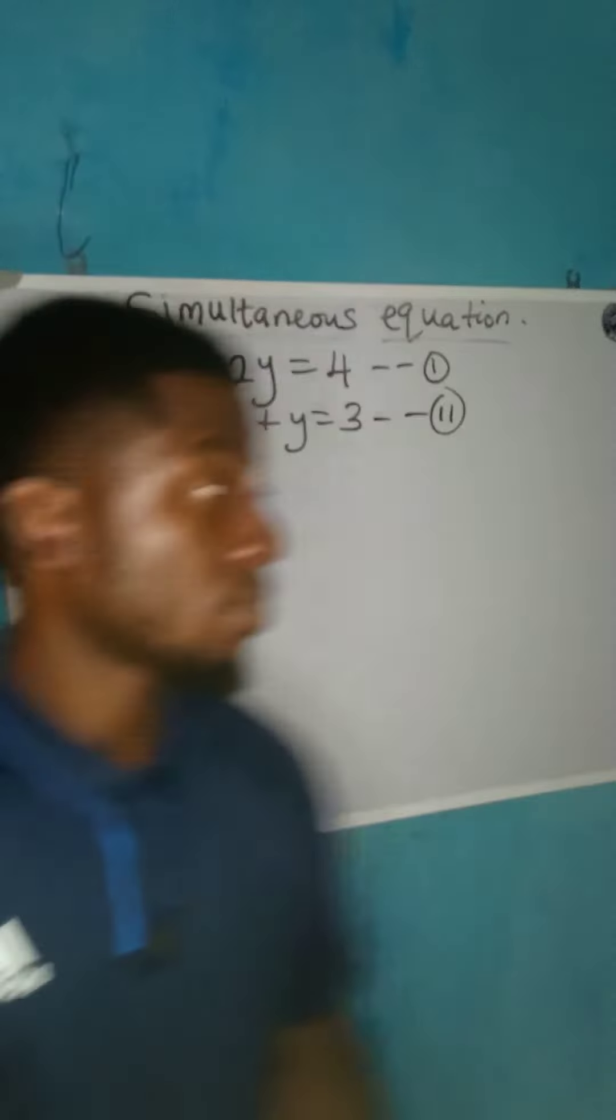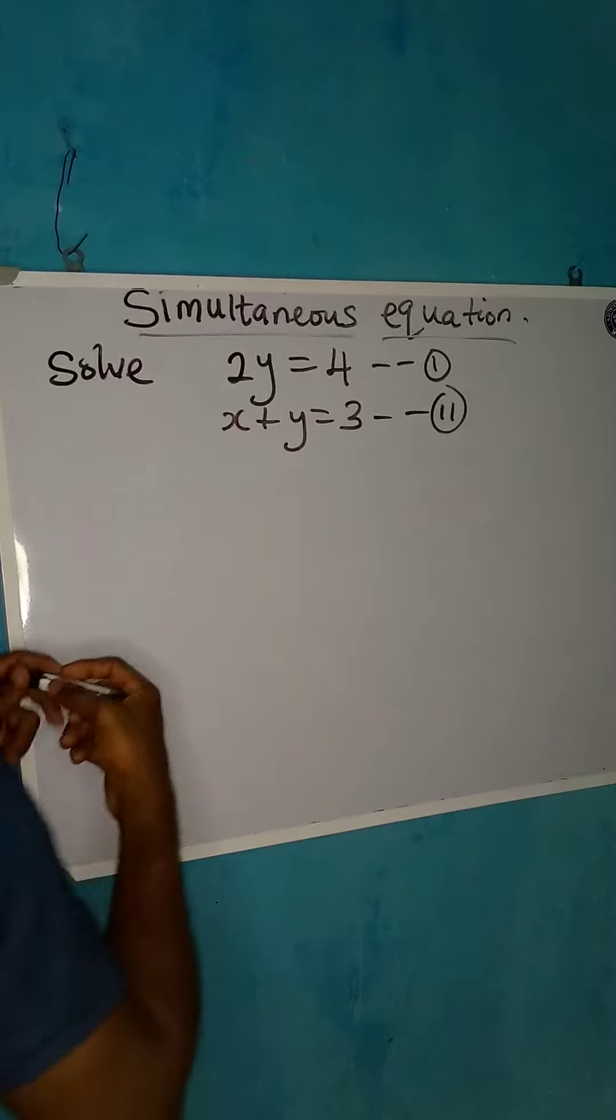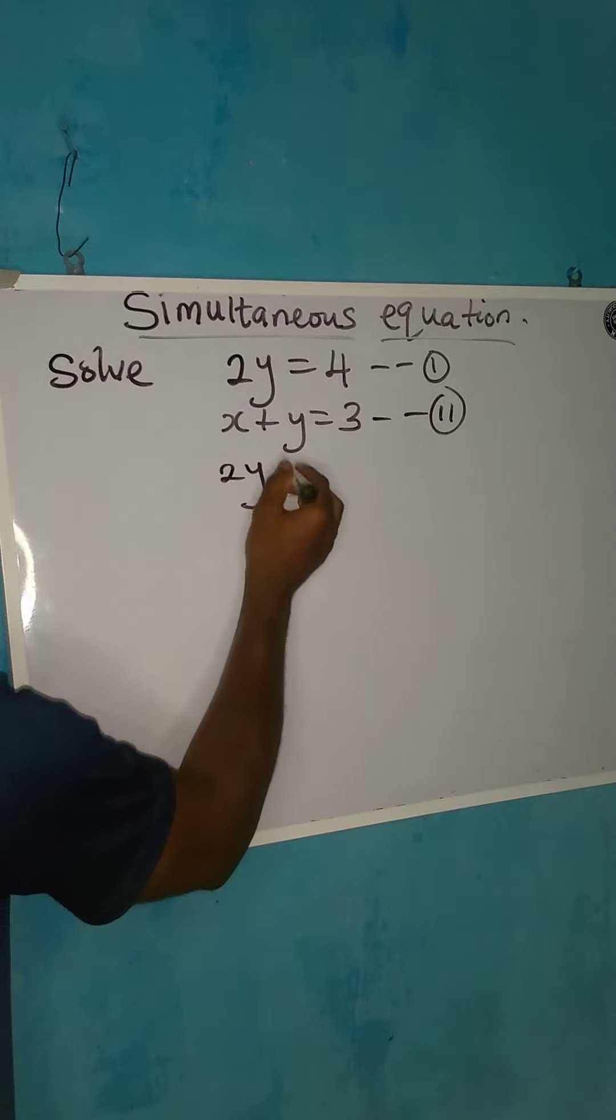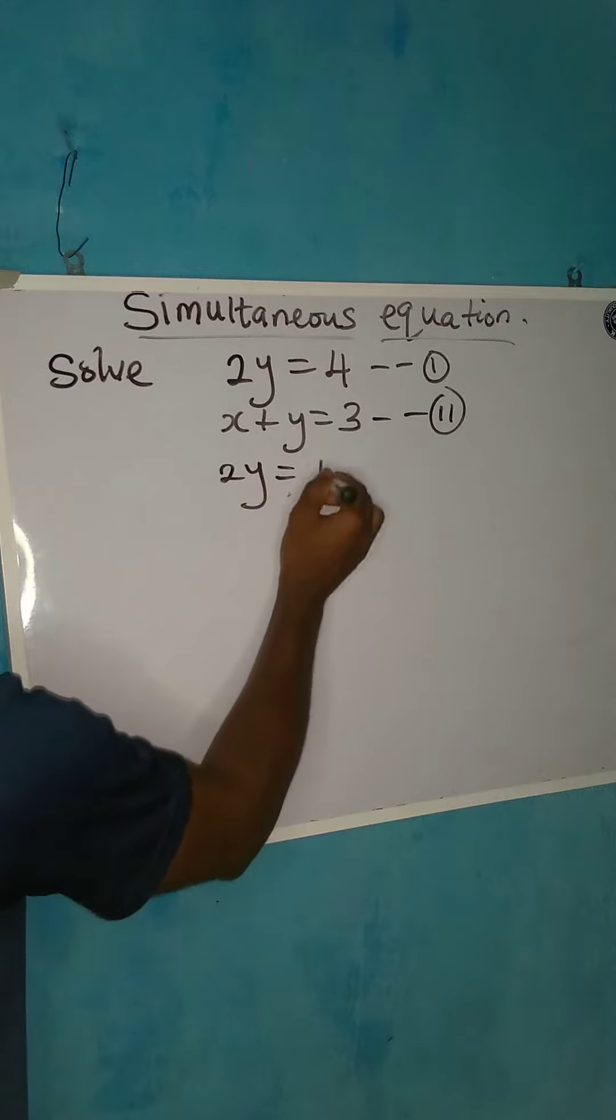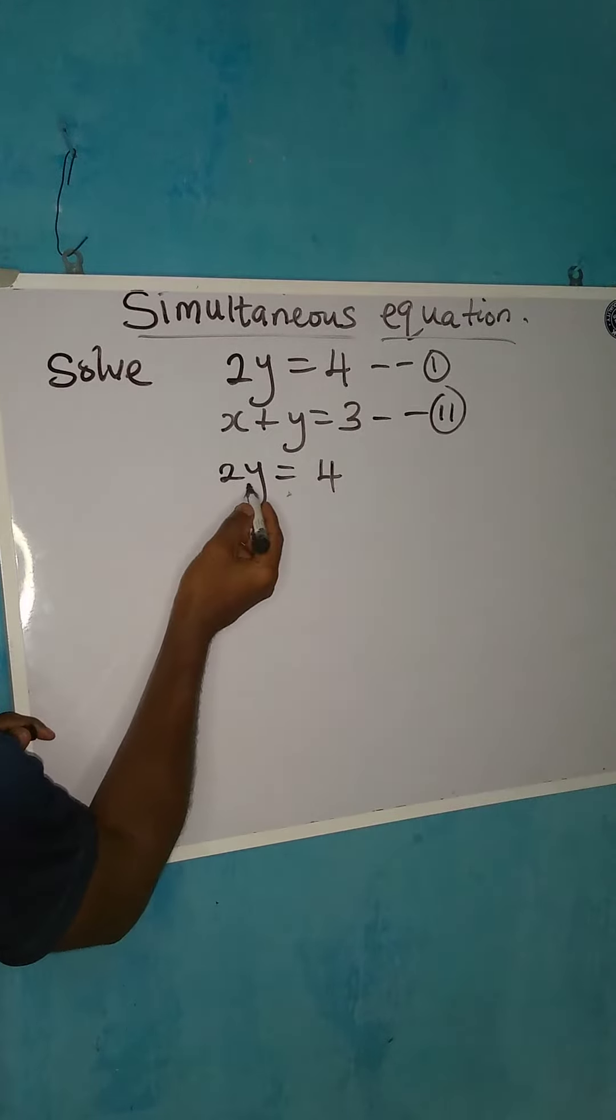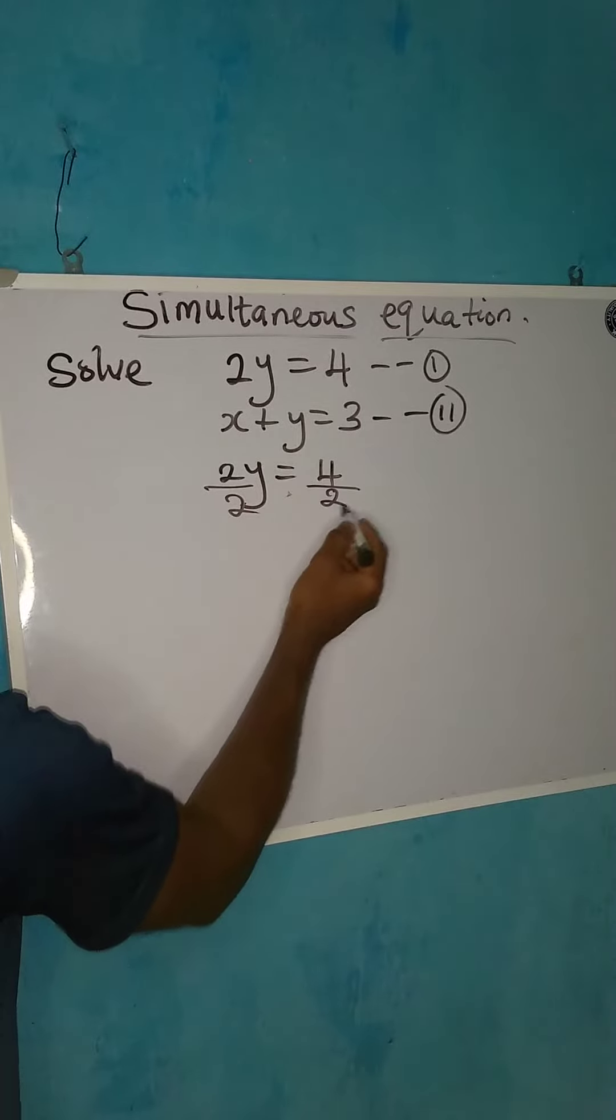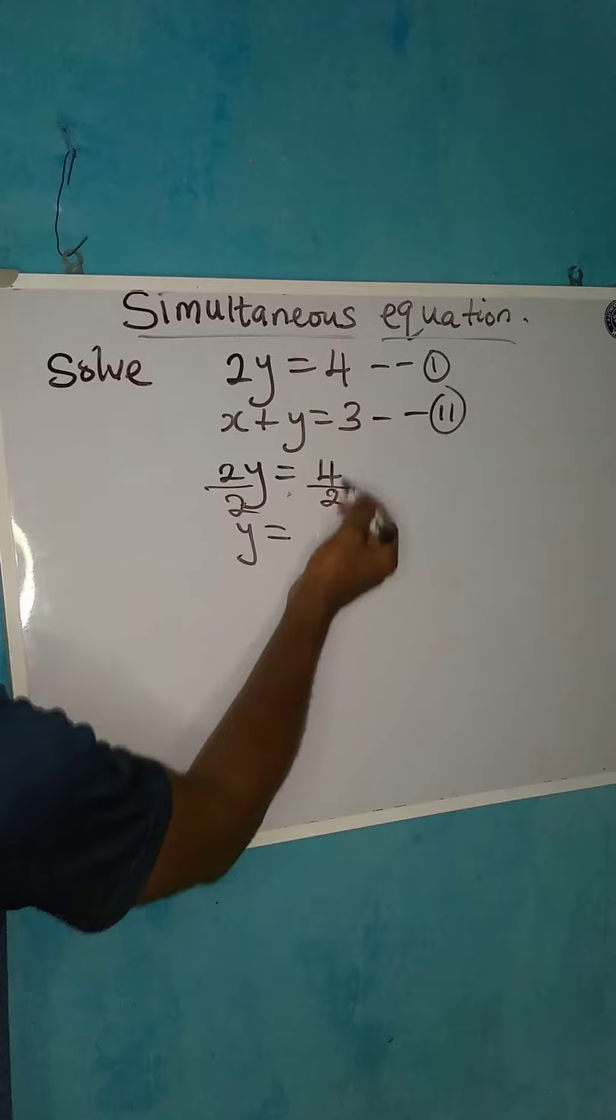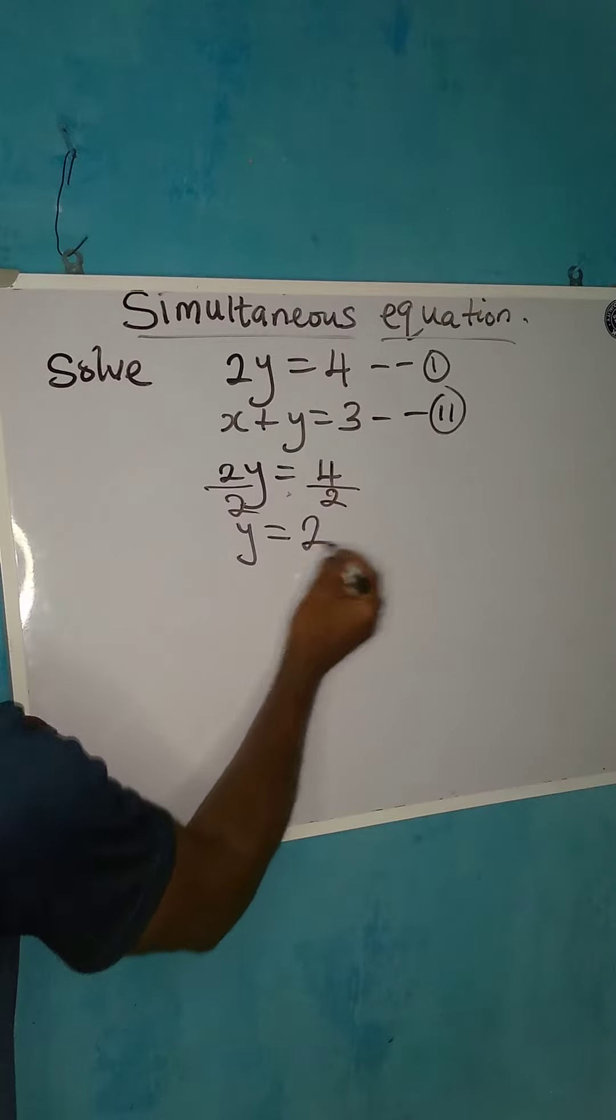From equation 1, we have that 2y is equal to 4. I can divide both sides by 2 so that I will know the value of y. So y is simply equal to 4 over 2, and that is 2.